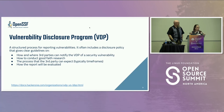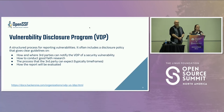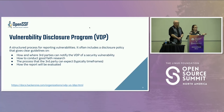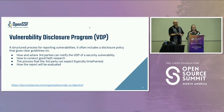A vulnerability disclosure program is a structured process that might exist at a company, an organization, or a large project. As a maintainer you might be running your own VDP; as a security researcher you might be interacting with one. These programs typically have clear guidelines on how and where third parties can notify the project about a security vulnerability, how you as a researcher are expected to conduct good faith research, the process you can expect including time frames, and how your report will be evaluated. Examples include the kernel security team, Kubernetes security team, Apache security team, and Red Hat product security.